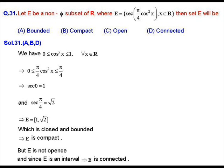Let θ = π/4 · cos²x. First we find the range of θ. Since cos²x lies between 0 and 1, multiplying by π/4 gives θ lying between 0 and π/4. So in sec(θ), θ ranges over [0, π/4].